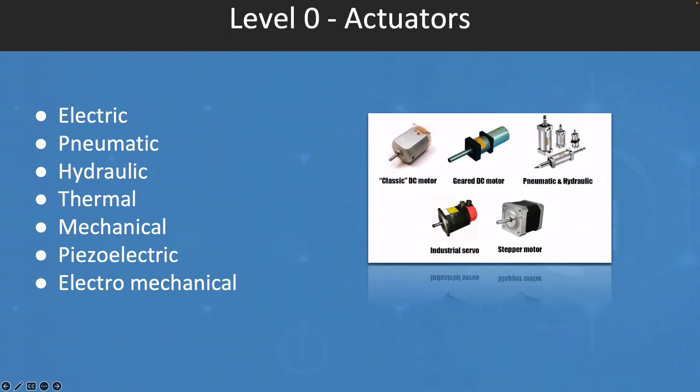By definition, the actuator is actually a device that transforms a certain form of energy into motion. As their mechanism converts energy into motion, we can categorize them based on energy sources. So we have the electric, pneumatic, hydraulic, thermal, mechanical, piezoelectric, and electromechanical.